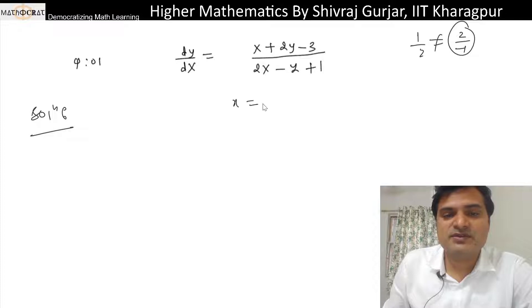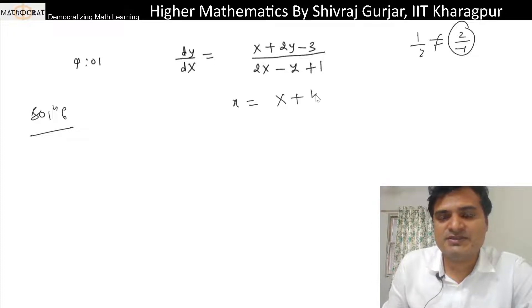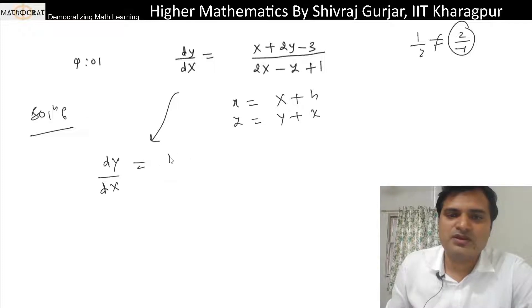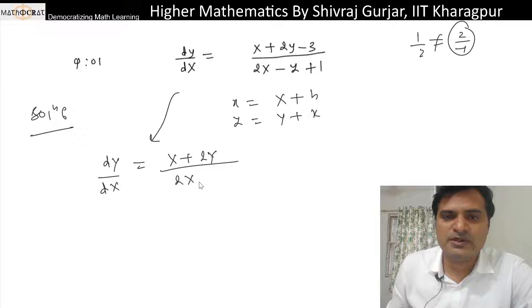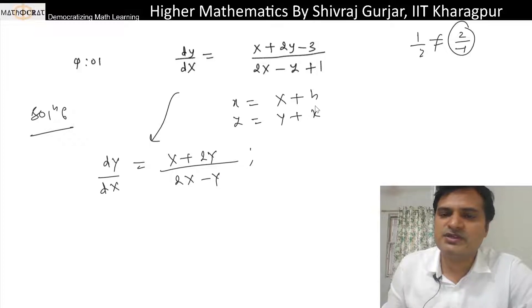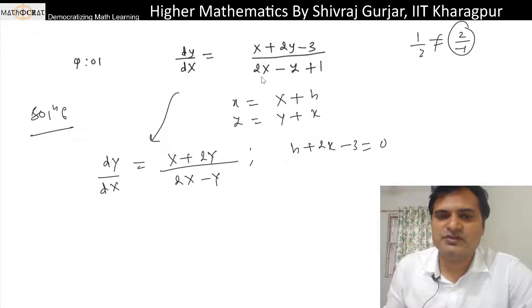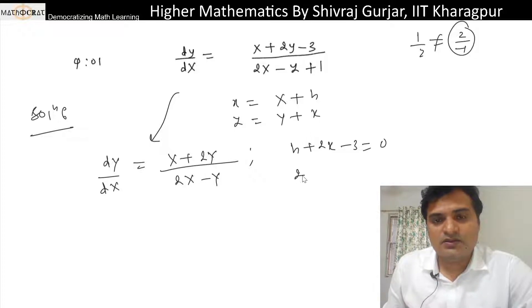So small x will be written as capital X + h, and y as capital Y + k. This converts to dY/dX = (X + 2Y) / (2X - Y). The constant terms give: h + 2k - 3 = 0, and 2h - k + 1 = 0.